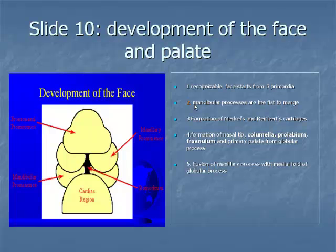Item 5: toward the end of the sixth week, the maxillary process fuses with the median nasal fold of the globular process, forming a true nostril as it gives rise to the lateral lip element.